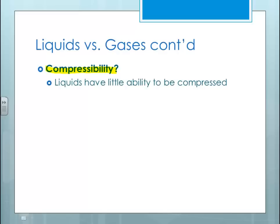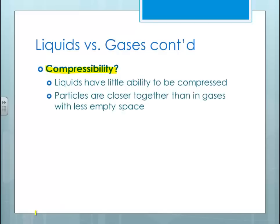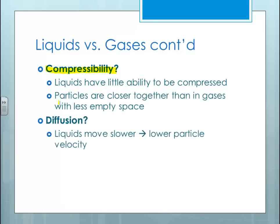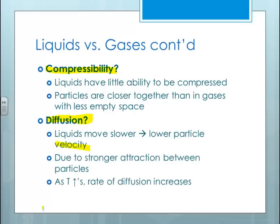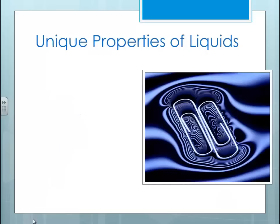If we look at compressibility — well, if the liquid particles are that much closer together, they're not going to be able to compress. For diffusion, liquids will move slower, so they will have a lower particle velocity, and therefore cannot mix as well. This is all due to the attraction between particles. If you were to increase a liquid's temperature, the rate of diffusion can increase simply because increasing the temperature increases the kinetic energy, so therefore you increase the motion of those molecules.